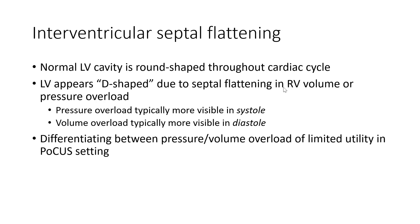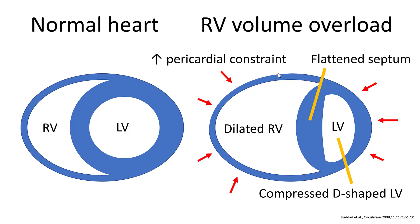Interventricular septal flattening is another important finding. Normally, the LV cavity is round throughout the cardiac cycle. In patients with RV overload, the LV can appear D-shaped due to septal flattening, which may be due to either volume or pressure overload. Pressure overload is typically more visible in systole, while volume overload is more visible in diastole. Differentiating between the two is limited in a POCUS setting; however, an EKG may help determine when the patient is in systole versus diastole. As shown in the diagram, RV volume overload leads to a dilated RV, a flattened septum, increased pericardial constraint, and a D-shaped left ventricle.